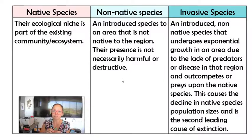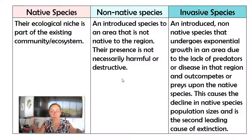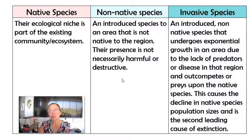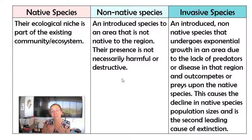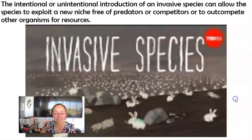For a species to thrive in a new area it needs appropriate temperature, rainfall, and humidity. An invasive species is successful in a new area for key reasons: it out-competes native species, and it lacks natural predators or disease — basically lacking density-dependent limiting factors. So it undergoes exponential growth, putting native species at risk of becoming endangered or extinct. Invasive species cost the United States around 50 billion dollars a year to fight and are the second leading cause of extinction.